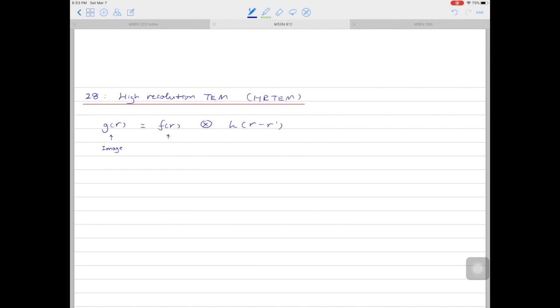g(r) is a function that describes what you see in the image. f(r) is a function that describes what you see from the object or what the object is supposed to be.